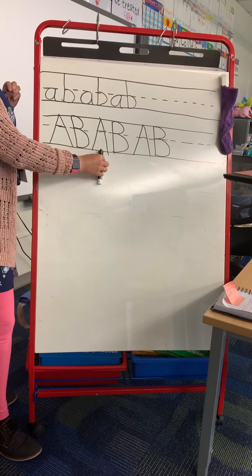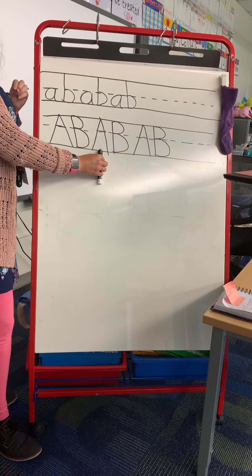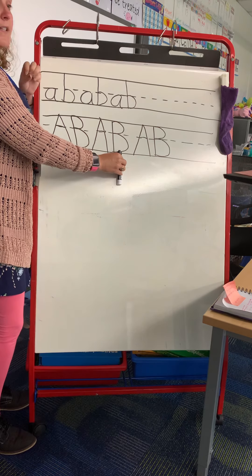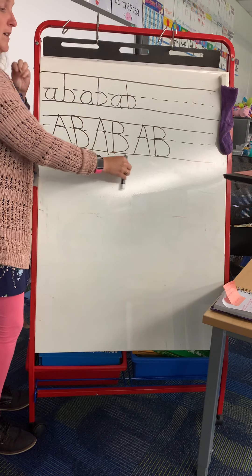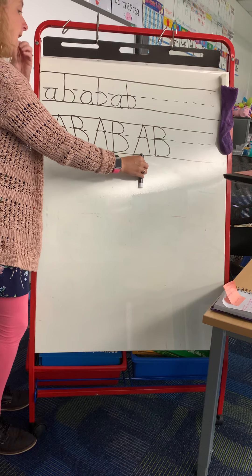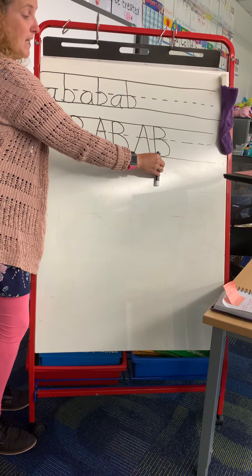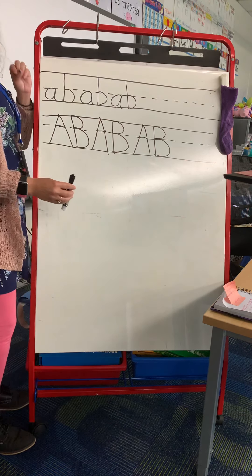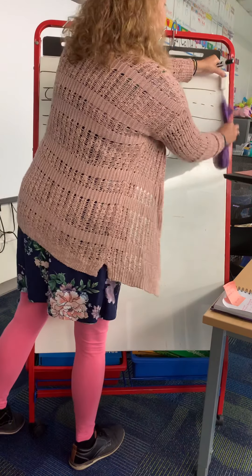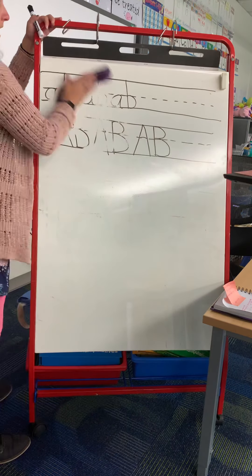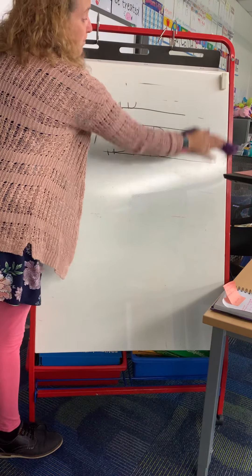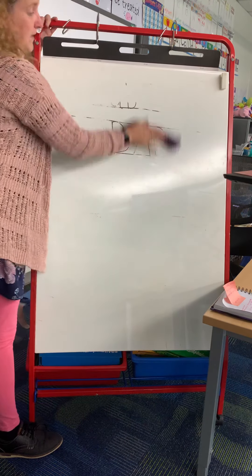We're going to say our letters and sounds. The name of the letter is A, the sound of the letter is A. The name of the letter is B, the sound of the letter is B. The name of the letter is A, the sound of the letter is A. The name of the letter is B, the sound of the letter is B. The name of the letter is A, the sound of the letter is eh. The name of the letter is B, the sound of the letter is buh.